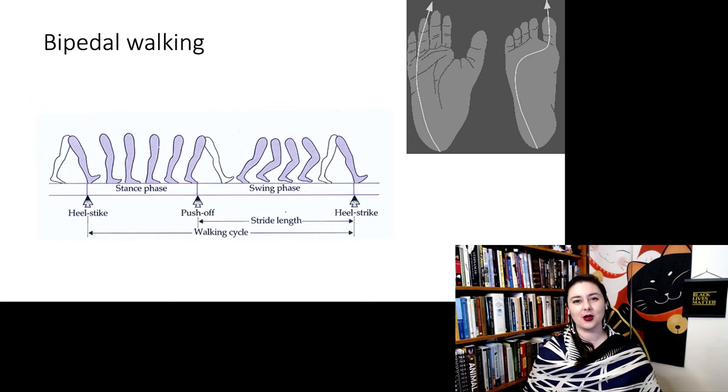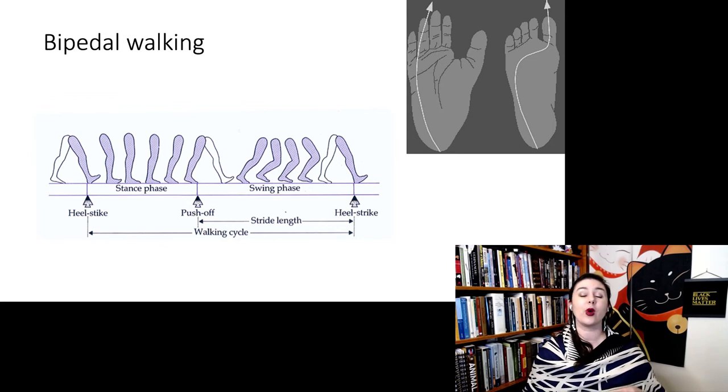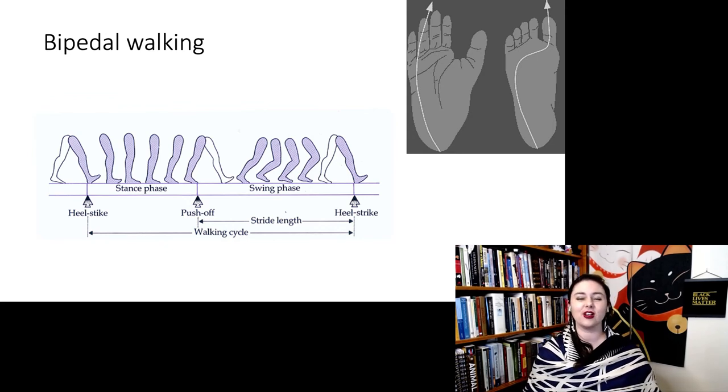When chimpanzees walk bipedally, the weight just kind of goes in a curve to the outside of their foot. And you can see the weight transfer happens in our foot in a very specific way around that longitudinal arch and then through that big adducted toe.